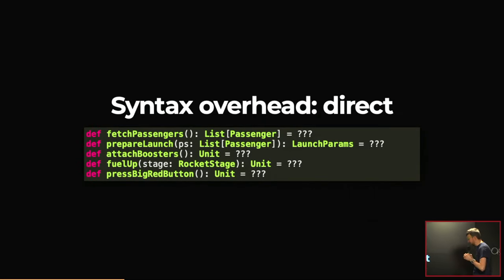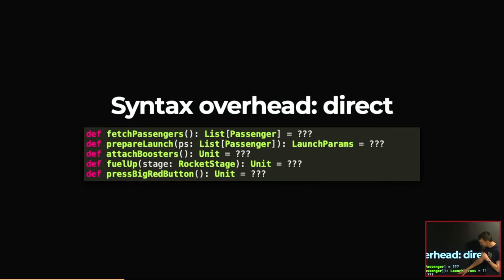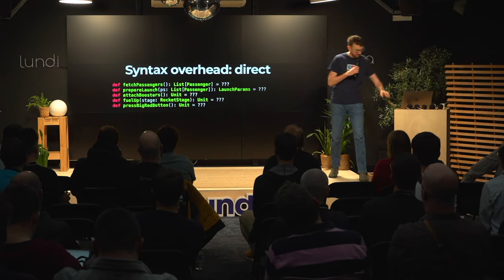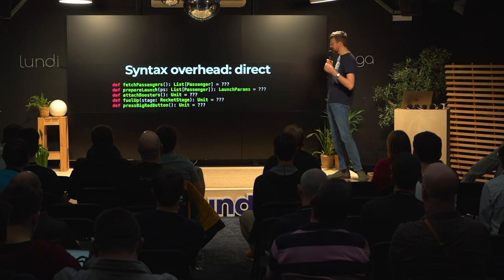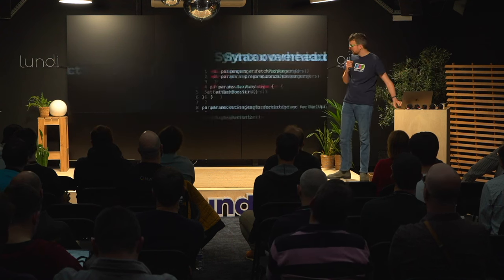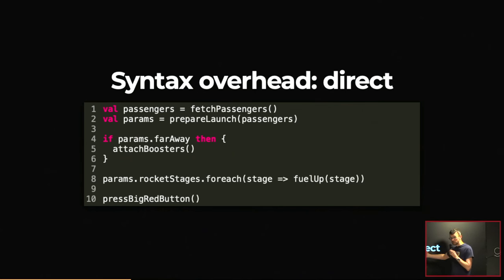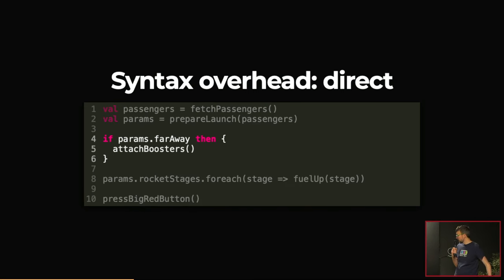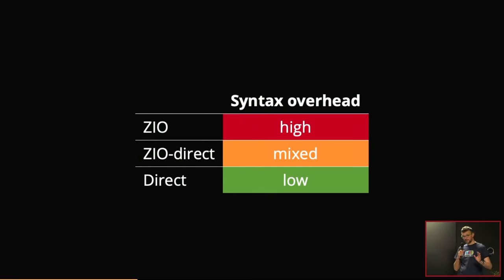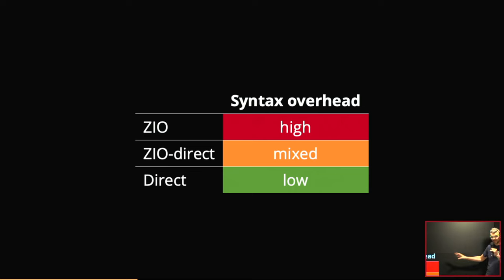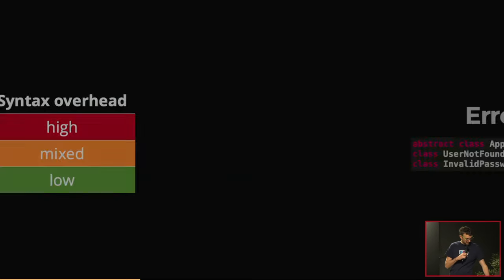In the direct variant, we have plain methods with no wrappers — no IOs — that simply do something. If you want to compose them, you just write the code in a direct style. We can use ifs and iteration normally. As far as syntax overhead goes: ZIO is definitely high on syntax overhead, direct style is low, and ZIO Direct is somewhere in between.